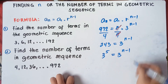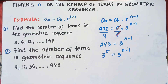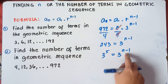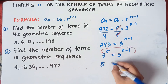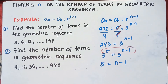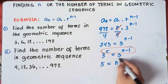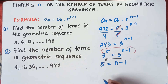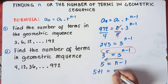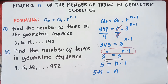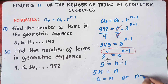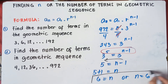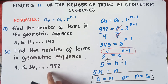So we can write 3 raised to the power of 5 equals 3 raised to the power of n minus 1. Since they have the same base, we equate the exponents: 5 equals n minus 1. Transposing, 5 plus 1 equals n, so n equals 6. That's it — that's how you find n in the geometric sequence.